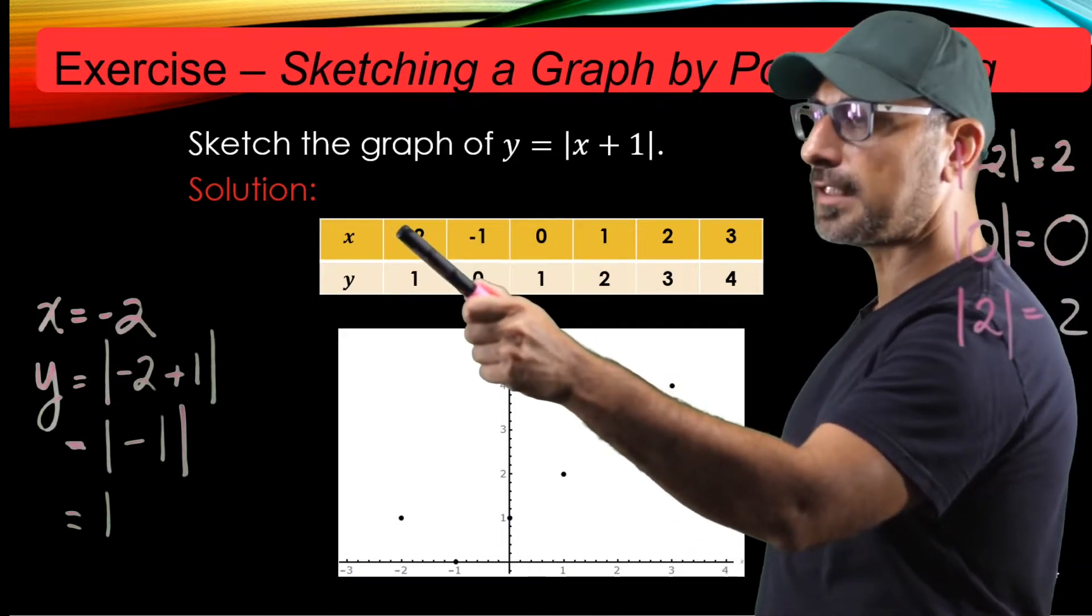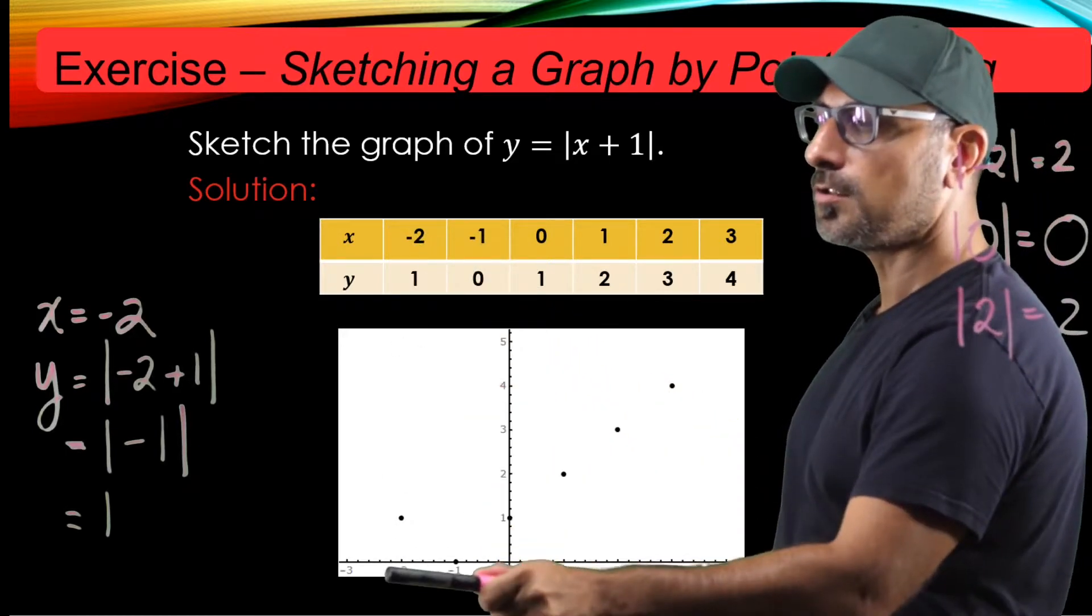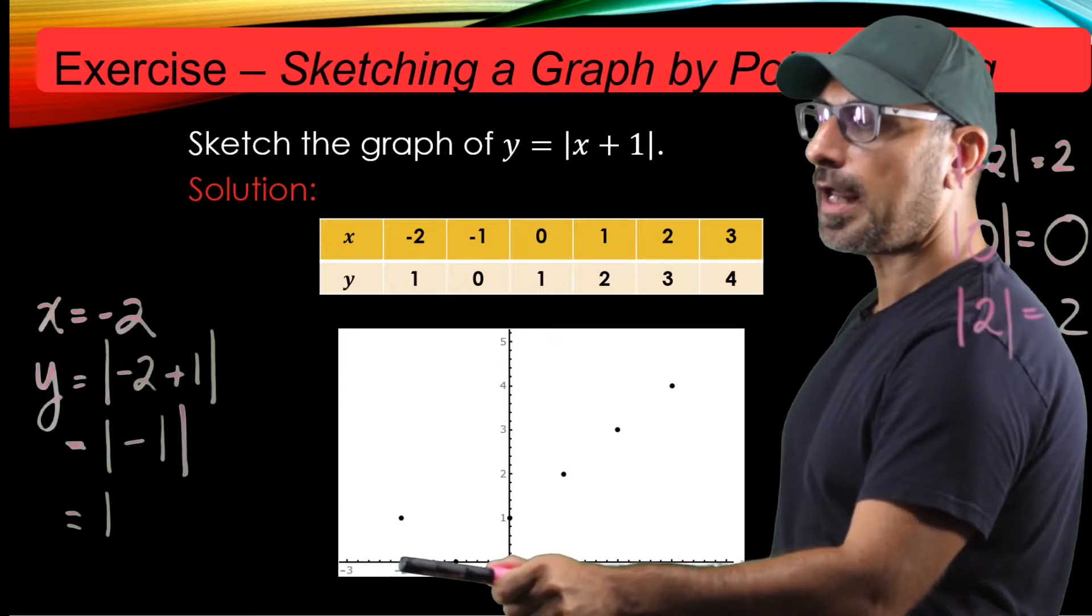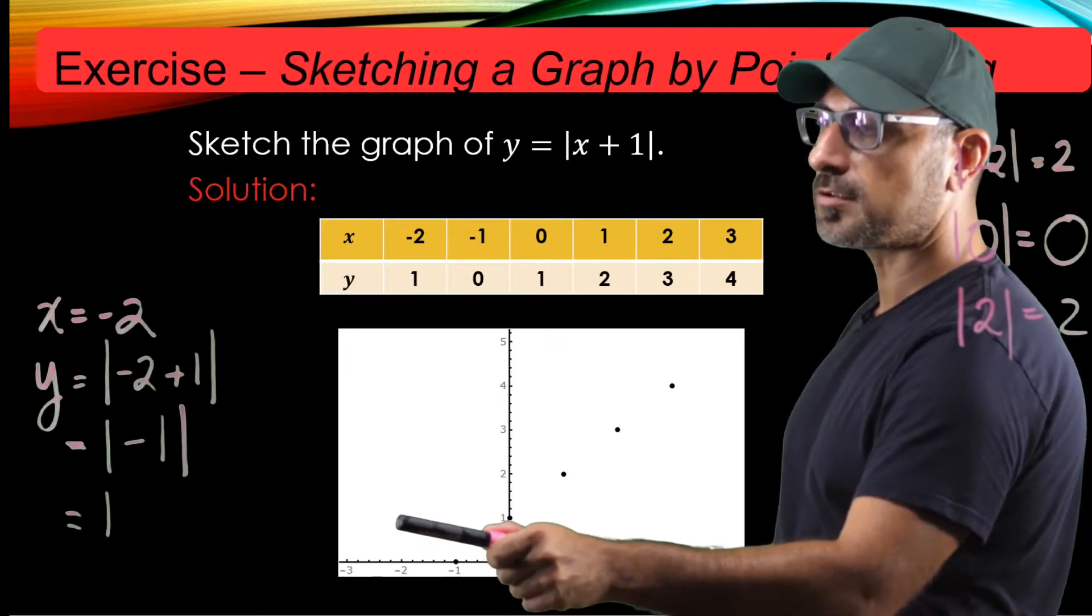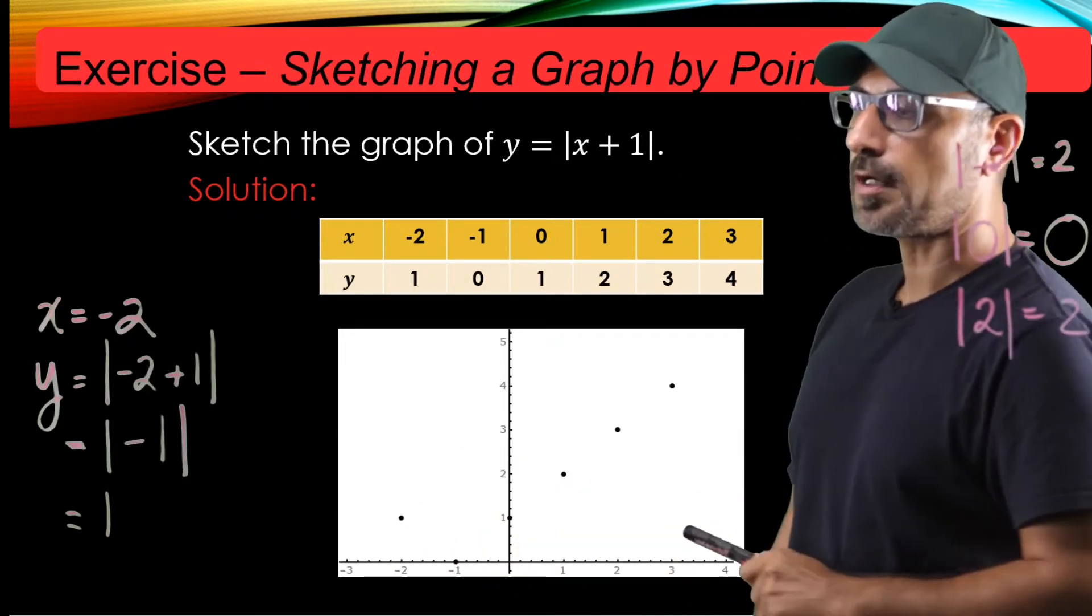For example, if you go to minus 2 and 1, you find a point where the x entry is minus 2 and the y entry is 1. Here we go, this is the point. I mark it.